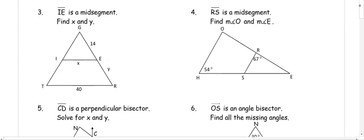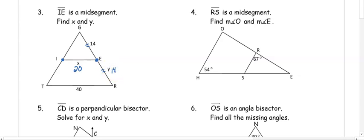In number three, IE is a mid-segment. Remember, a mid-segment connects two midpoints together. We want to find X and Y. Since X is a mid-segment, it's going to be half of the base, so X is 20 — half of side 40. We also know that if E is a midpoint, it bisects that side congruently, so both pieces are 14, meaning Y is 14.